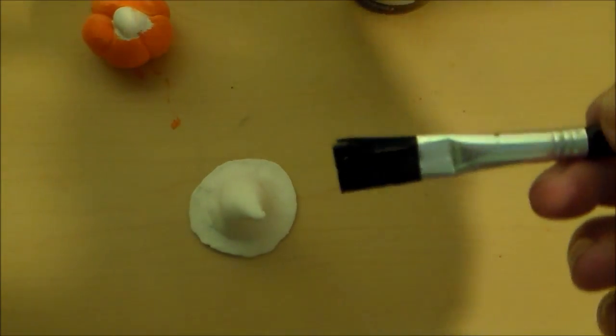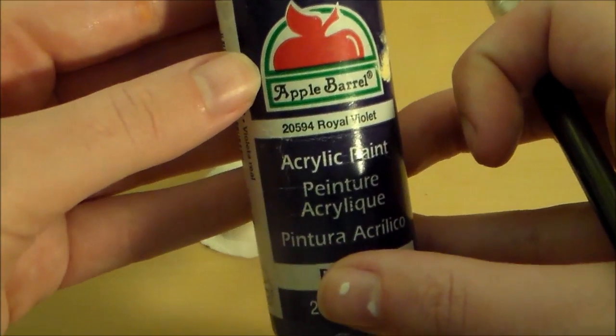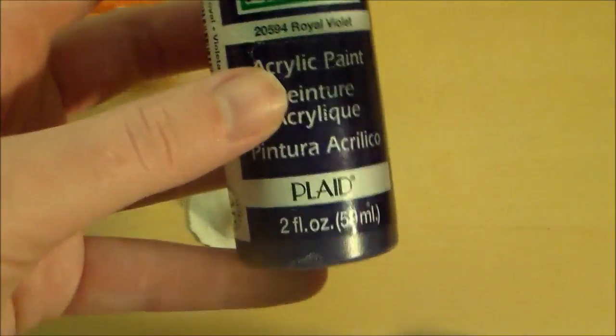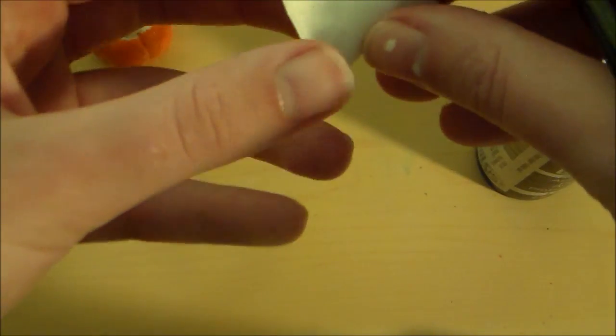Alright, make sure you clean your brush in between paint colors. The next color we're going to be using is 20594 royal violet. Again, same brand. And I'm going to paint this entire witch's hat to that color.